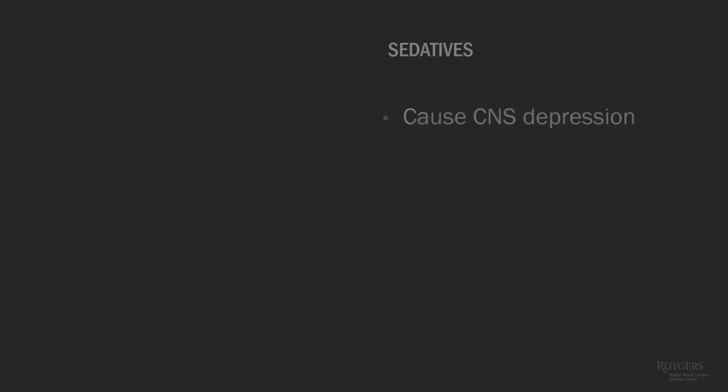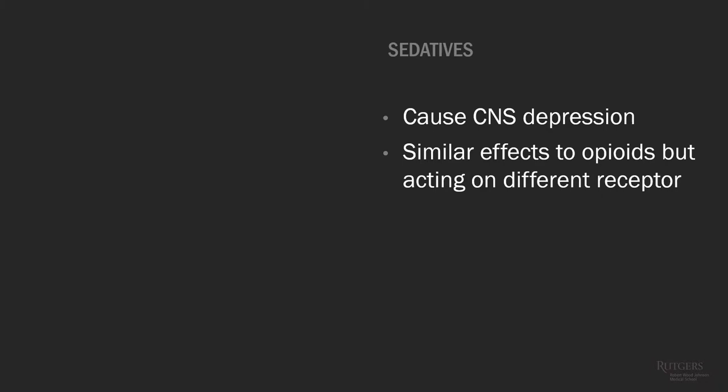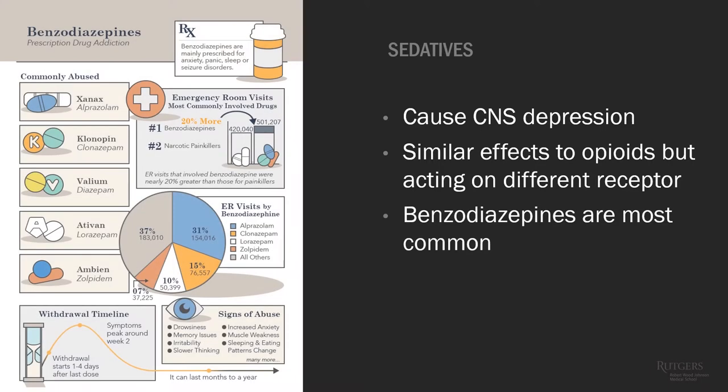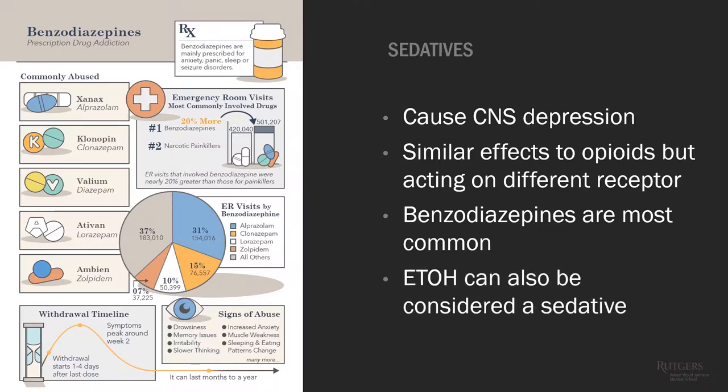Sedatives are a group of medications that, as a whole, act by GABA agonism in the brain and can cause CNS depression. They can look similar to opioids, but act on the GABA receptor rather than the opioid receptor. Benzodiazepines are probably the most commonly used clinically and the more commonly abused in this category. Alcohol also acts as a GABA agonist and can be considered a sedative.